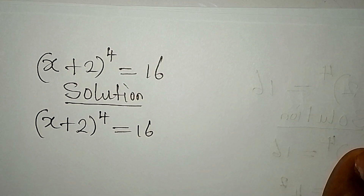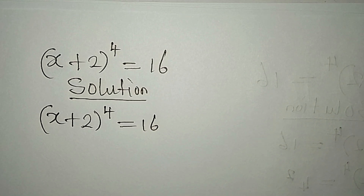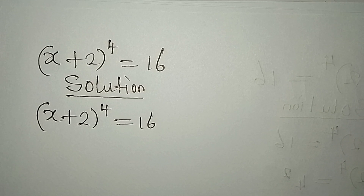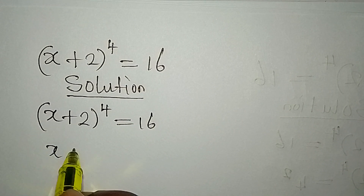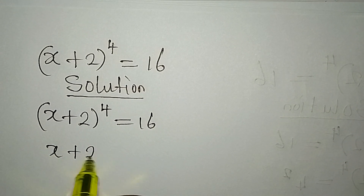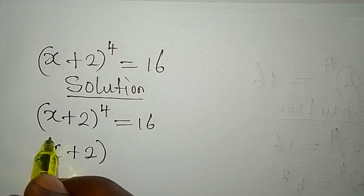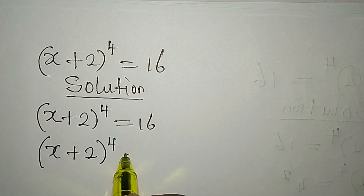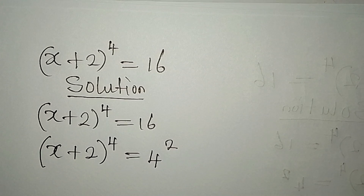We want to provide the complete solution to this problem. The first step is to rewrite the right-hand side: x plus 2 to the power of 4 equals 4 to the power of 2.